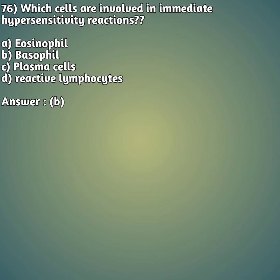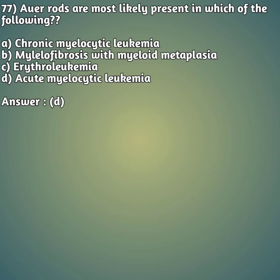Moving to our 76th question: which cells are involved in immediate hypersensitivity reaction? Hypersensitivity is an allergic type of reaction. Immediate hypersensitivity produces a reaction within hours, while delayed hypersensitivity occurs in 48 to 72 hours. Which cells are involved? Option A: eosinophils. Option B: basophils. Option C: plasma cells. Option D: reactive lymphocytes. The right answer is answer B - basophils are involved in immediate hypersensitivity reactions.